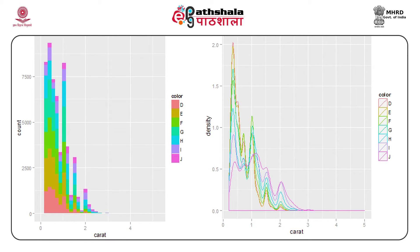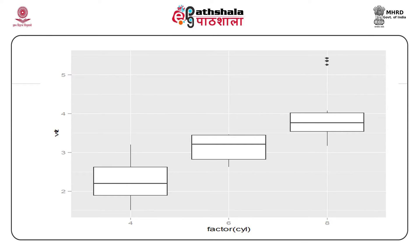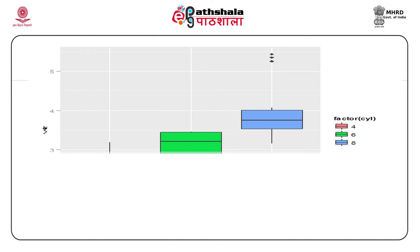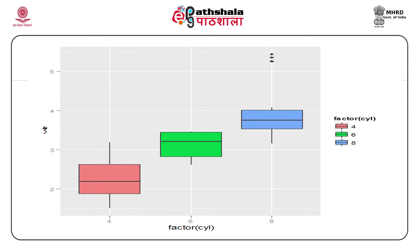Here we are introducing another two commonly used plots: box plots and jittered points. Suppose a dataset includes a categorical variable and one or more continuous variables, and we are interested to know how the values of the continuous variables vary with the levels of the categorical variable. In that case, we can use box plots and jitter points.